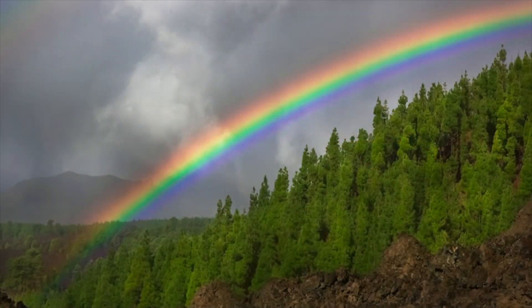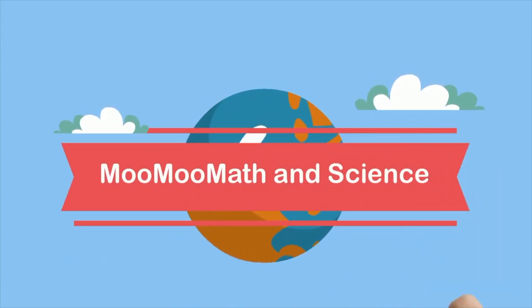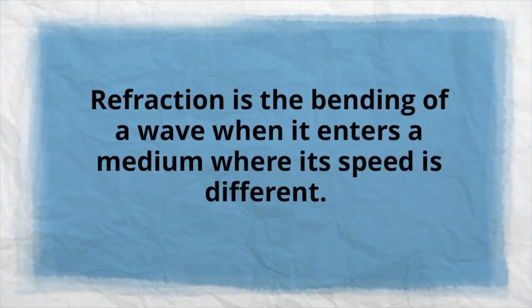This rainbow and sunset are a result of refraction and diffraction. Welcome to MooMooMath and Science. Refraction is the bending of a wave when it enters a medium where its speed is different.